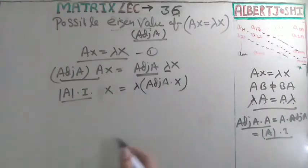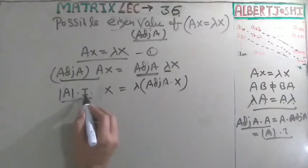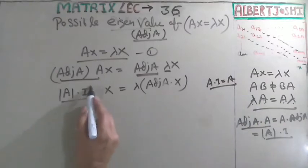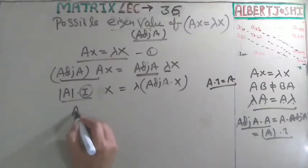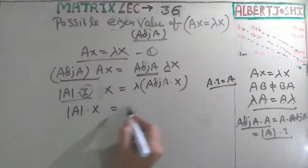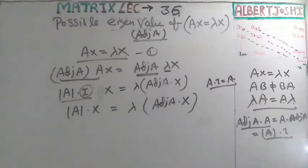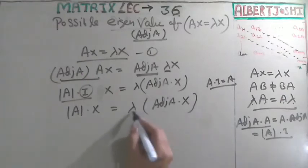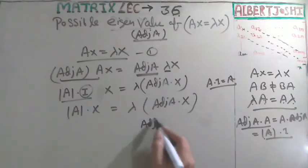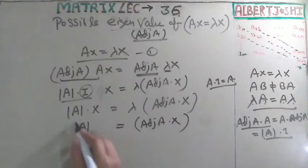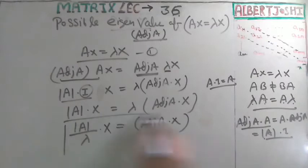Also note that A times I equals A, so we can write: A times x equals λ times adjoint of A times x. From this condition, adjoint of A times x equals (determinant of A / λ) times x. So the eigenvalue of adjoint of A is determinant of A divided by λ.